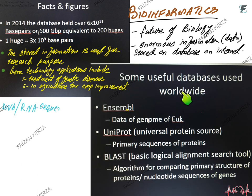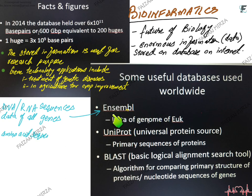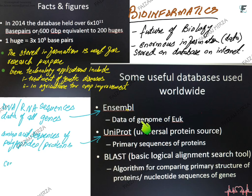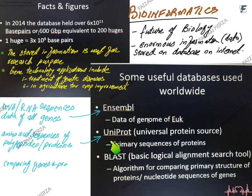There are useful databases available worldwide. Ensembl contains genome data of eukaryotes, including DNA and RNA sequences and gene data for organisms like humans and yeast, among many others. UniProt is a universal protein source holding primary sequence data — the amino acid sequences of polypeptide proteins. And then there is BLAST: the Basic Local Alignment Search Tool, an algorithm for comparing the primary structure of proteins and the nucleotide sequences of genes.